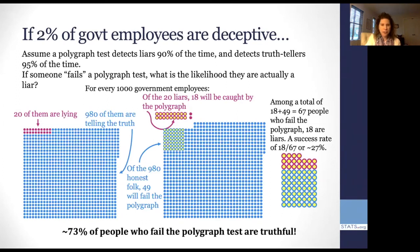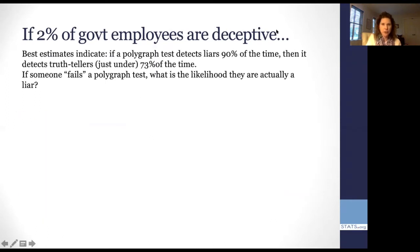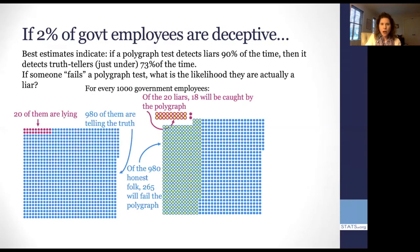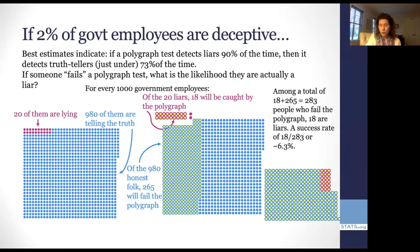So I thought this was curious. I actually went and looked up, what are the rates that we actually say in research? What do people actually think are the rates of sensitivity and specificity? And they came out with something that was close to 90% of the time of detecting liars, but only about 73% of the time detecting the truth tellers. So much less specificity. And what we came up with there was, if you then run the same numbers as before, all of a sudden from the 980 folk, 265 are going to fail the polygraph test. And of the total, when we put all those 283 people together, only 18 of them were actually liars, giving us that 94% of the people who are failing the polygraph test are truthful.